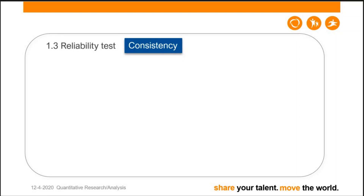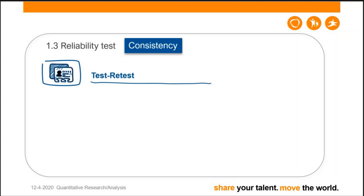After collecting questionnaire data, we need to test reliability — which is synonymous with consistency. That means checking whether respondents' answers are consistent with each other. There are three methods: the first is test-retest, where you administer the same questionnaire to the same group after one week or one month. This is time-consuming and difficult because it requires revisiting the same respondents.